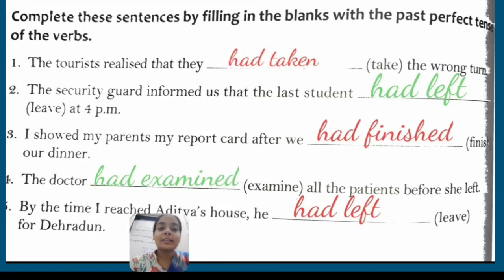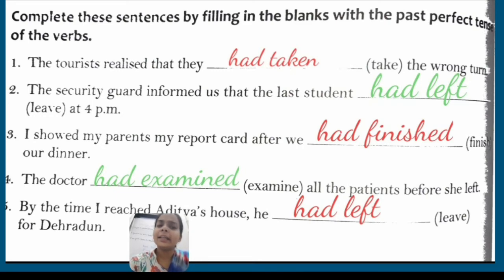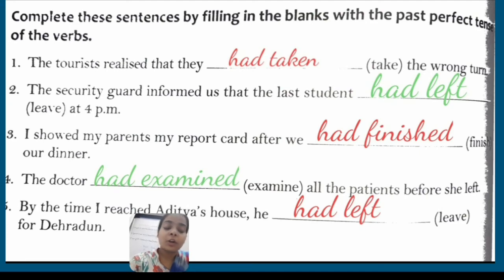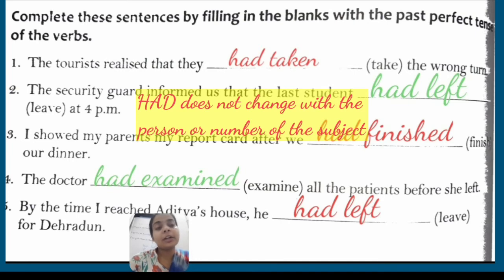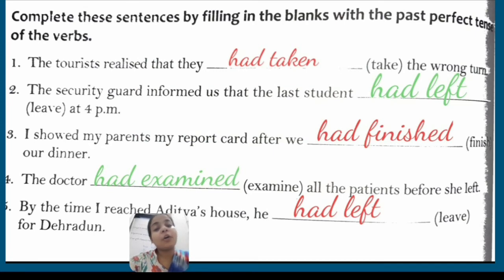Here are the answers: 'had taken' — 'taken' is the past participle form of the verb 'take'. 'Had left' — 'left' is the past participle form of 'leave'. 'Had finished' — that's a regular verb, so we simply added 'ed', base plus 'ed'. 'Had left' again. And the last one: 'He had left for Dehradun.' As you can see, the auxiliary 'had' does not change with any type of subject — it does not change with the number or the person of the subject. I hope you all did these exercises very well.